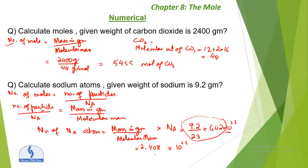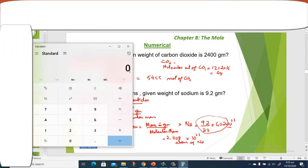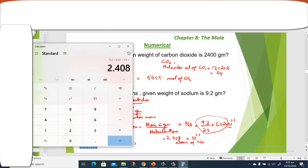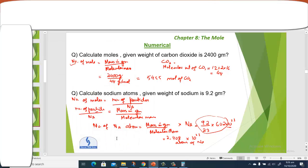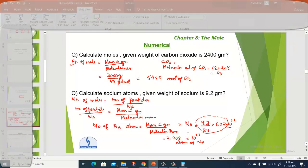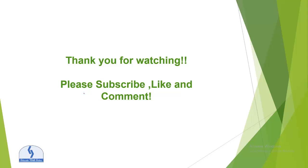Let me show you on the calculator: enter 9.2, multiply by 6.02, divide by 23, and you get 2.408. Do not enter 10²³ into the calculator — instead, write '× 10²³' separately in your answer column, because after using the calculator you might forget to include it. Thank you for watching. Please subscribe, like the video, and comment.